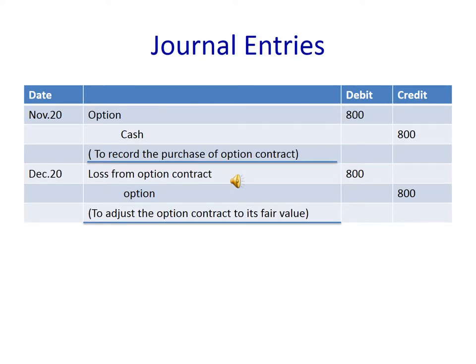On November 20, the option is debited with the premium and cash is credited with the same amount. On December 20, the company decided not to exercise the option, so the option is credited with $800 and Loss from Option Contract is debited with the same amount.